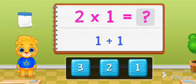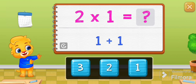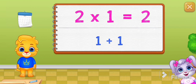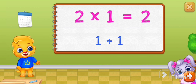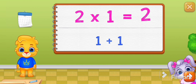If you can add numbers, you can multiply them. Two times one is the same as adding one. Two times one is just like one plus one equals two.